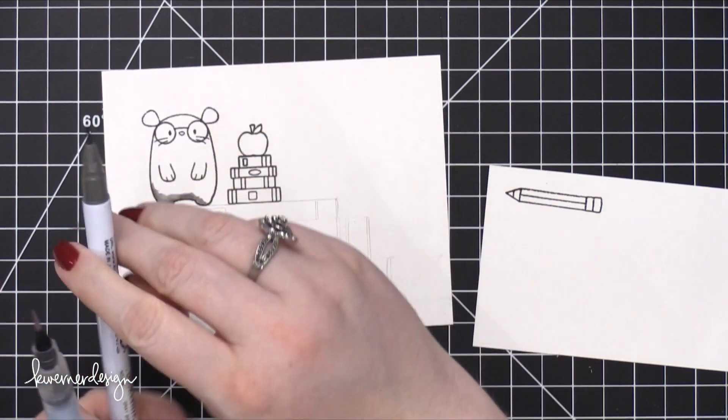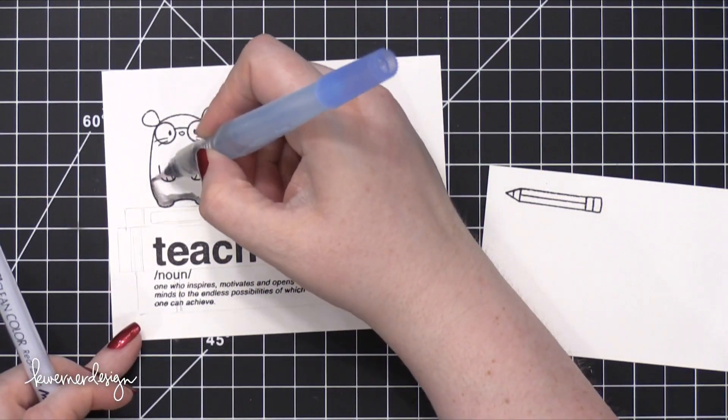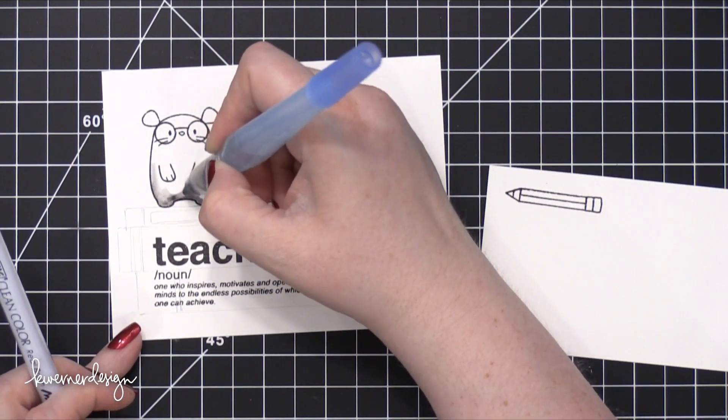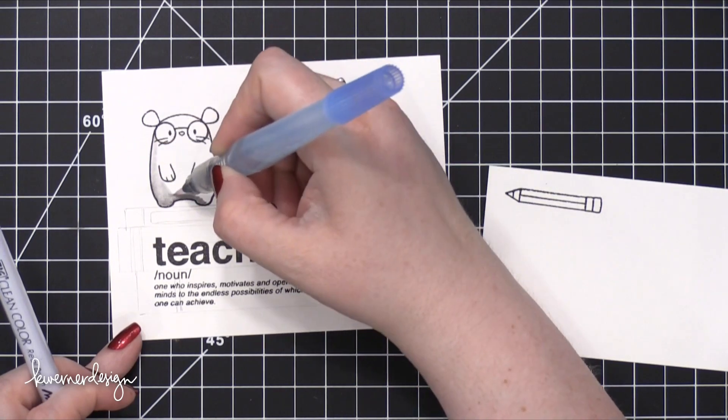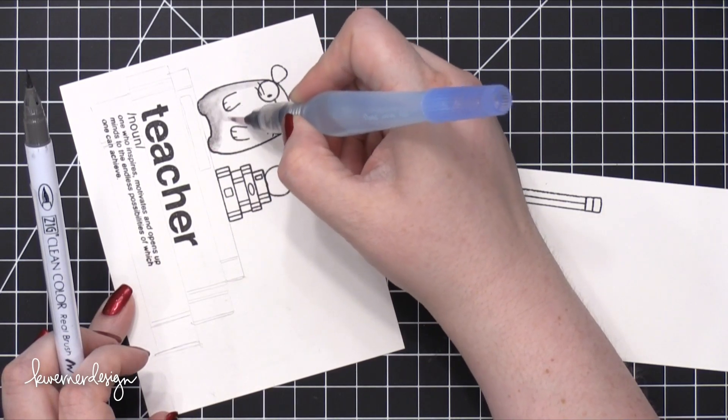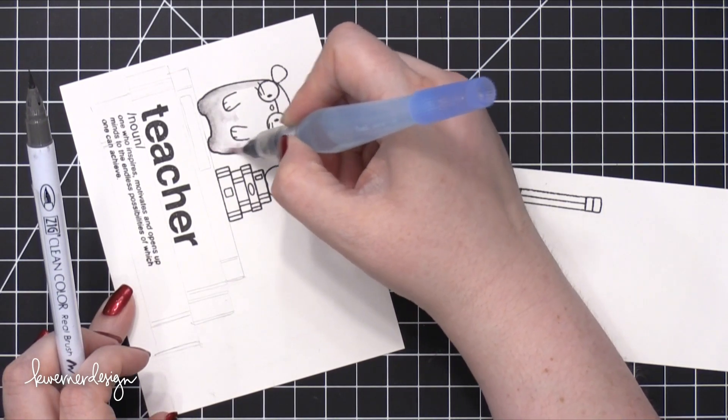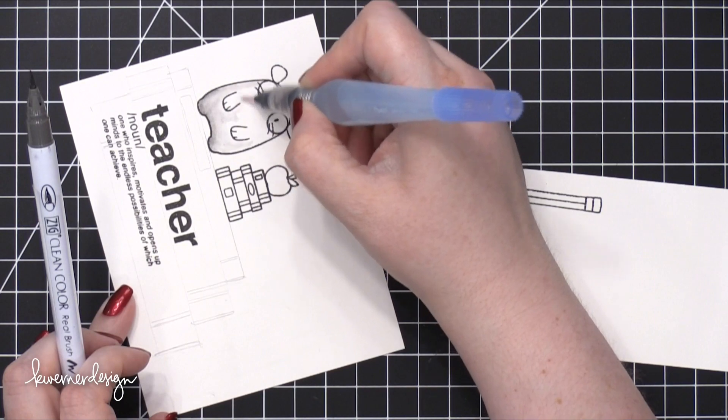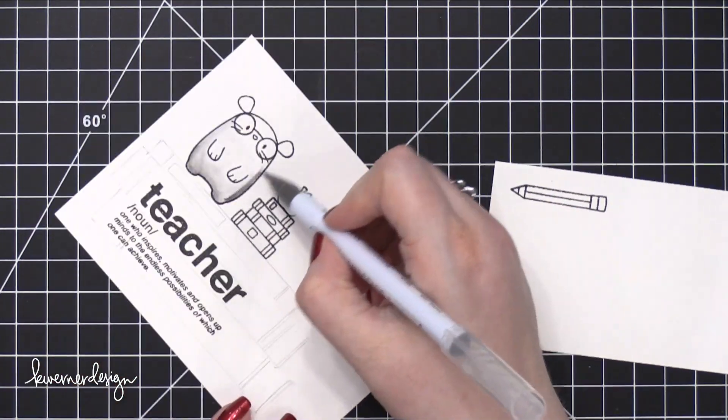So like I said before, I'm using some Zig Clean Color Real Brush markers and a water brush to do some painting today. This is a small Pentel Aquash water brush and I really like to use a water brush like this when I'm using watercolor markers just for convenience sake.